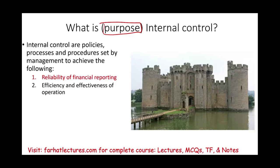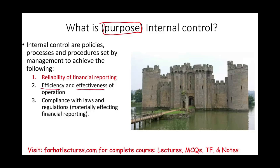Two: efficiency and effectiveness of operation — how well you are running your operations. Three: compliance with laws and regulations, especially those materially affecting reliability of financial reporting. As auditors, our primary concern is reliability of financial reporting. We look at efficiency and compliance only insofar as they relate to financial reporting.